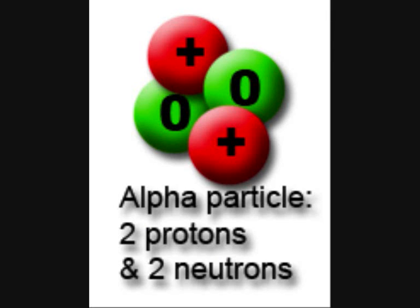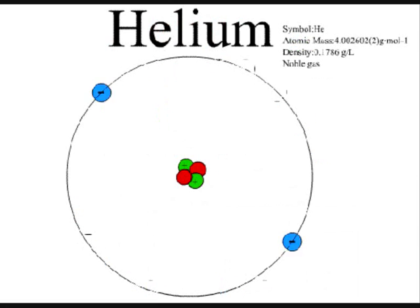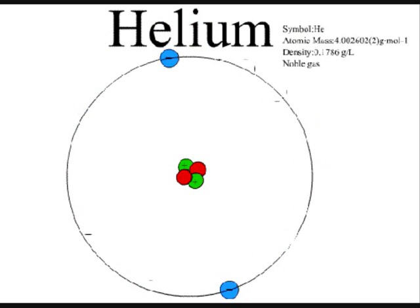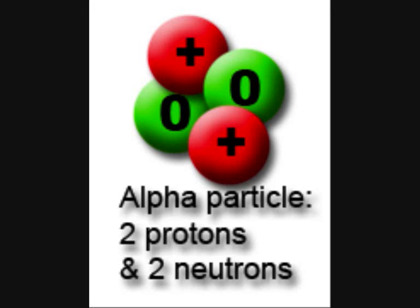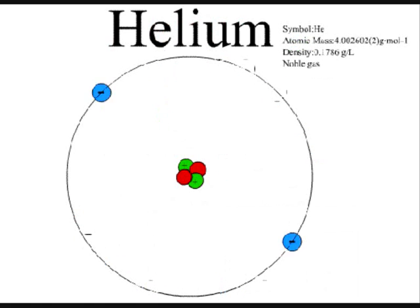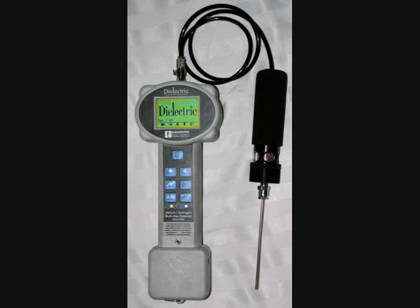Alpha particles are only two protons and two neutrons with no electrons. The only difference between alpha particles and helium atoms are its electrons. The rods that produce the plasma arcs are sometimes radioactive to a degree which emit alpha particles. The idea is that the alpha particles are ionizing due to the high voltage and high current, producing helium atoms which are then detected by helium detectors.